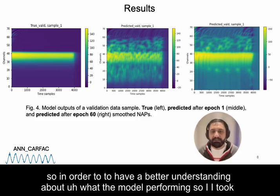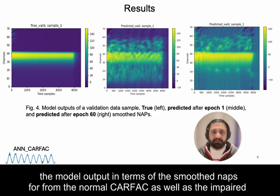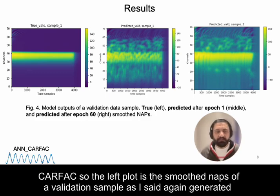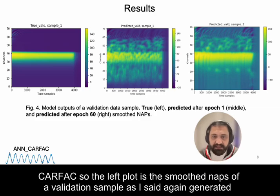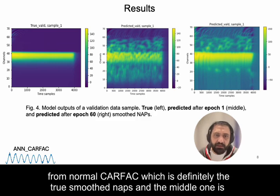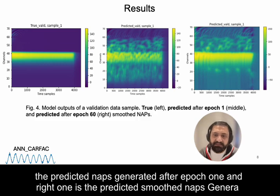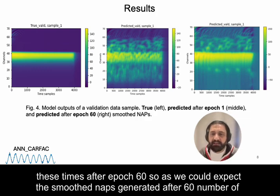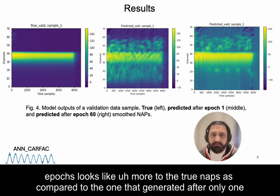To better understand what the model is doing, I examined the model output in terms of smoothed NAPs from both the normal and impaired CARFAC. The left plot shows the smoothed NAPs of a validation sample generated from the normal CARFAC — the true smoothed NAPs. The middle plot shows the predicted NAPs after epoch 1, and the right plot shows the predicted smoothed NAPs after epoch 60.